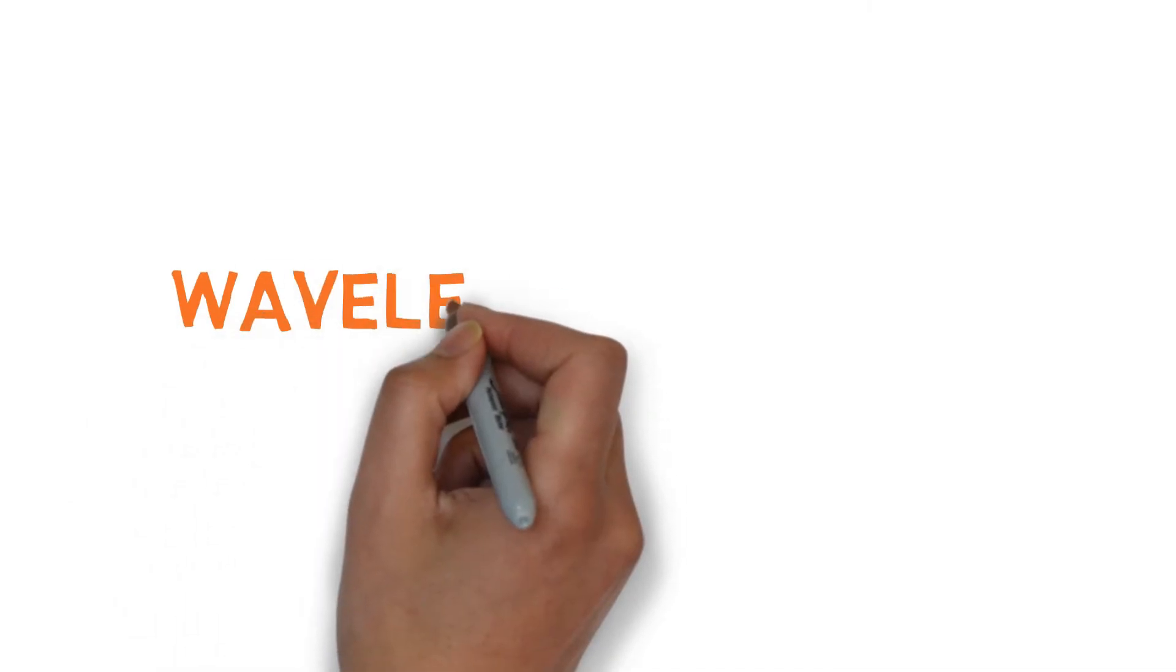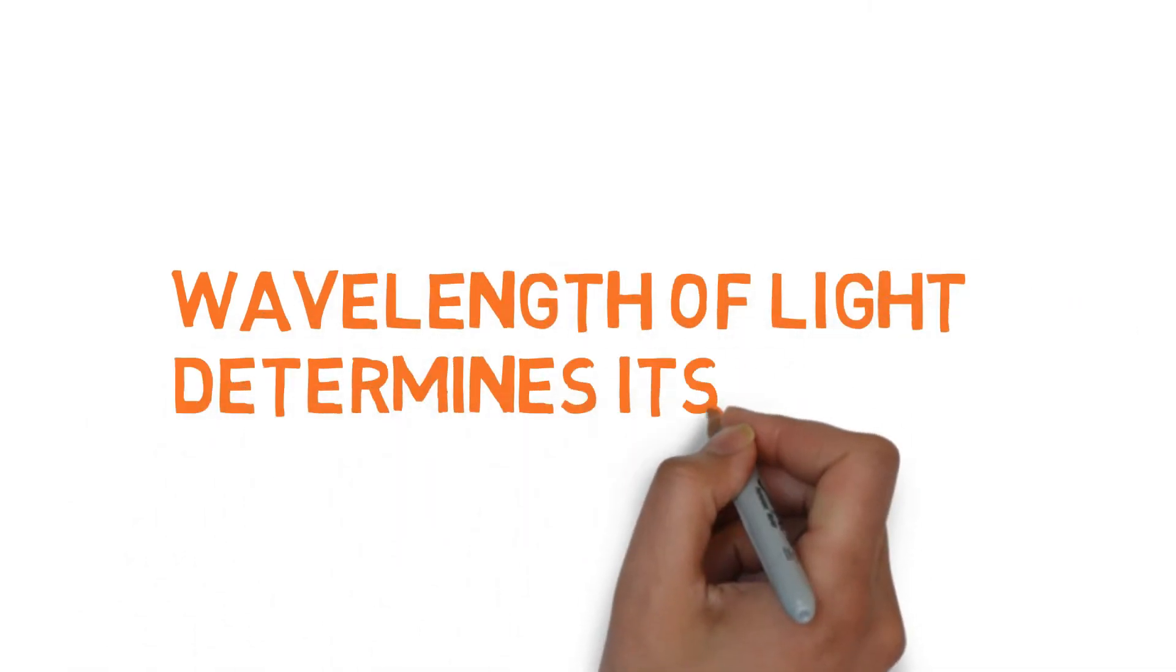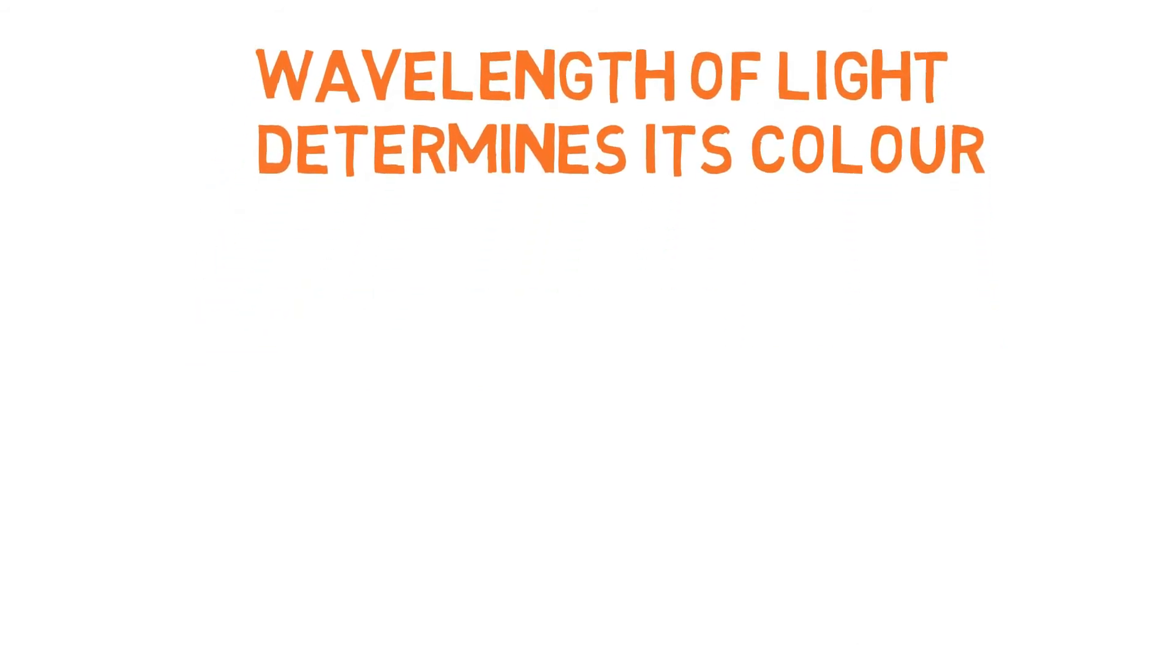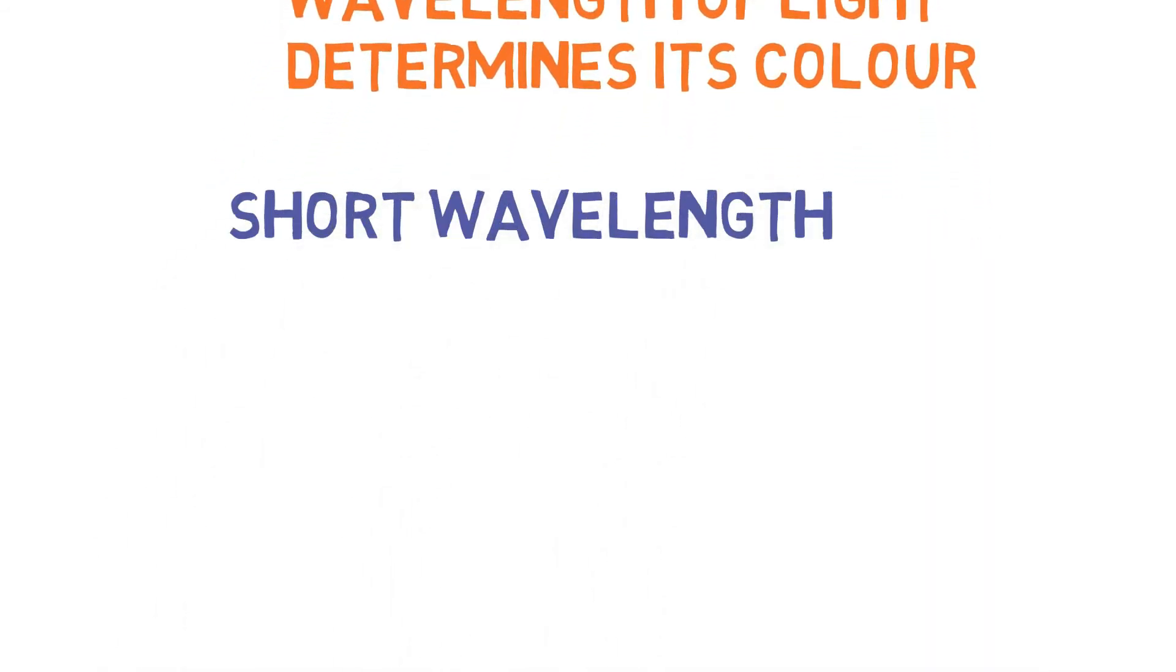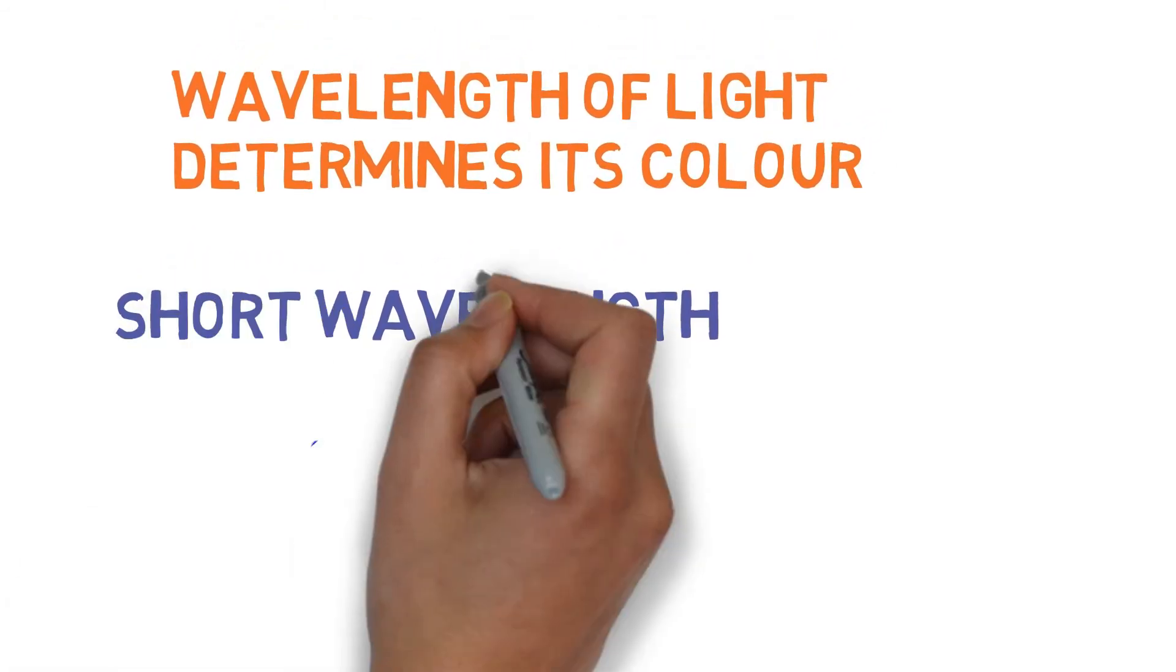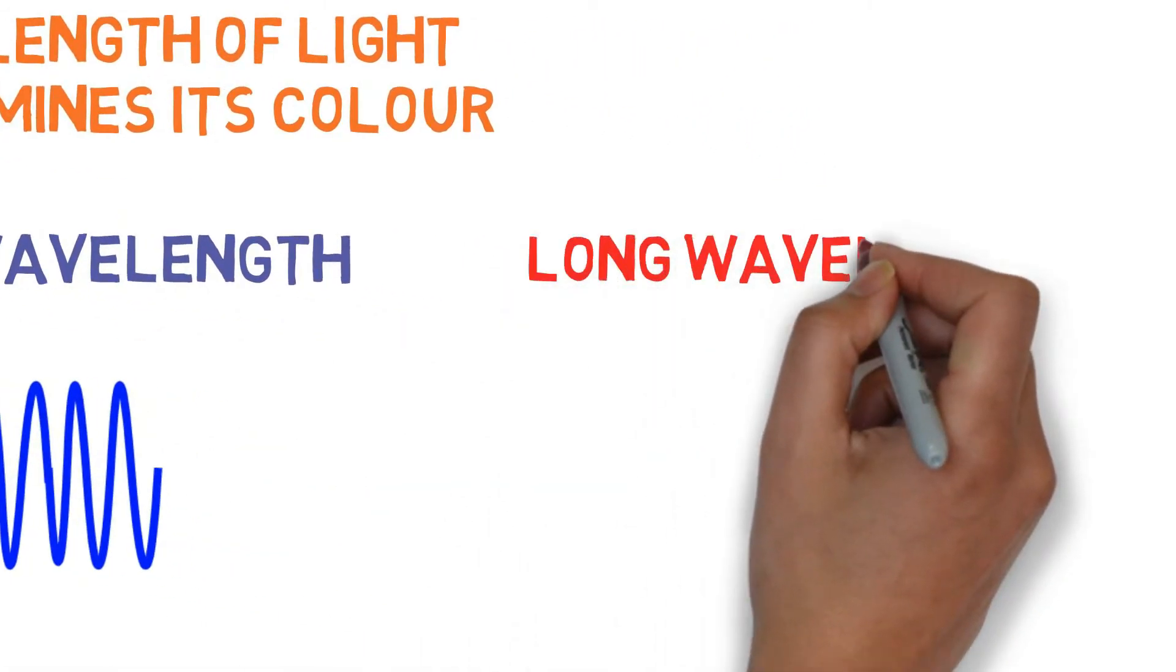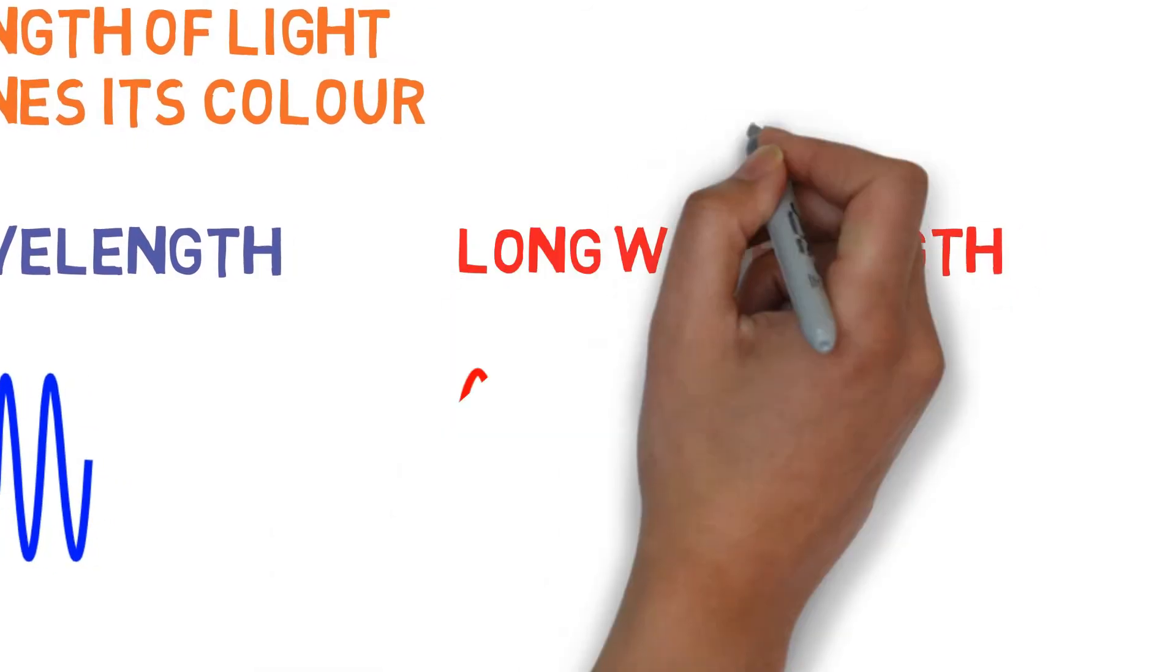In a photon, the wavelength of light gives the photon its color. The shorter wavelengths which are in high frequency are more blue in color. The longer wavelengths which have smaller frequencies are more red in color.